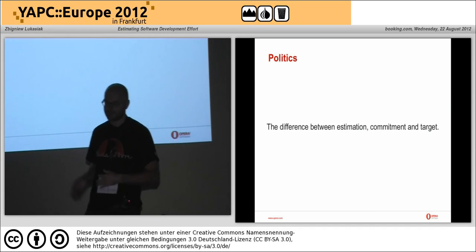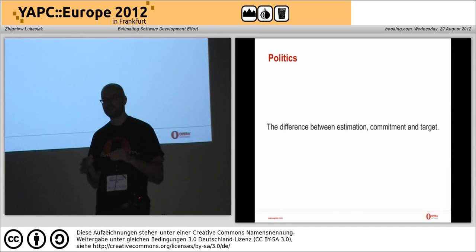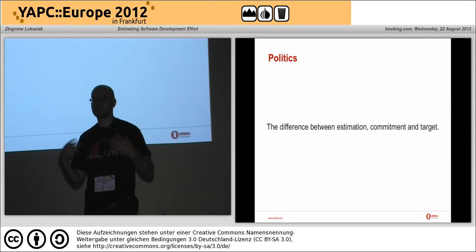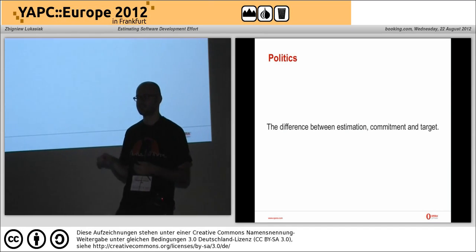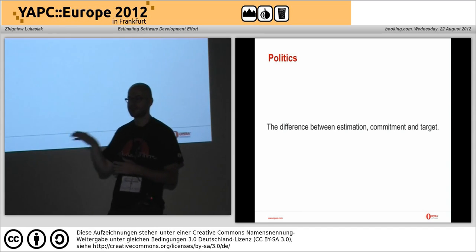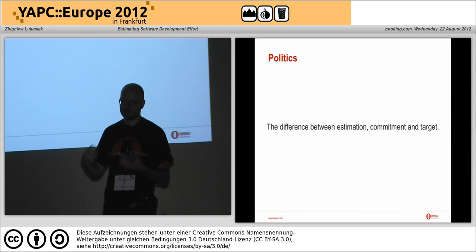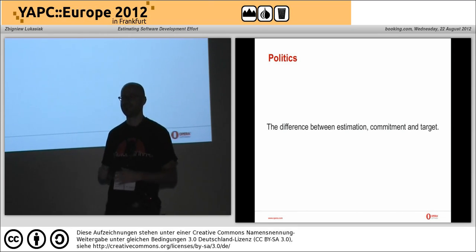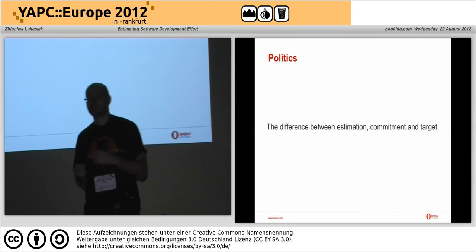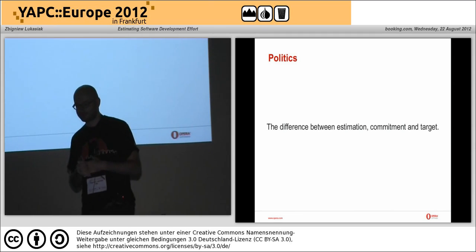Politics is very important. You need to know the difference between estimation, commitment, and target. The estimation is the objective number - how long it will take without making any changes to the project. The target is what the business wants. Your commitment is what you commit to your manager that you will do. Your commitment will usually be the target, but sometimes not.